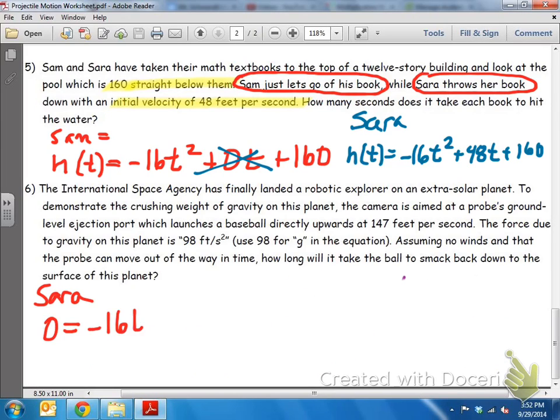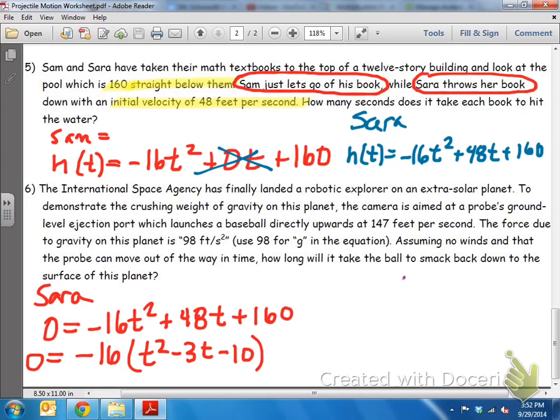So Sarah threw her book off the building at 48 feet per second. So we'll go ahead and keep that in there. And looking at this equation, we want to find the height at zero when it hits the water. So that's why I set the equation equal to zero. And I have a trinomial this time, but I could still look for the greatest common factor, which I could factor out a negative 16 from all three of these. So I'm going to get t squared minus 3t minus 10. So negative 10 goes on the top of my x-factor chart, and negative 3 goes on the bottom. And what two numbers would satisfy my x-factor chart? I believe negative 5 and positive 2 would do that, because negative 5 times 2 is negative 10, and negative 5 plus 2 is negative 3.